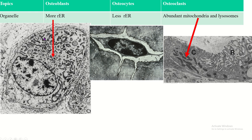The osteoblast contains more rough endoplasmic reticulum and Golgi complex. The osteocyte, being the inactive form of the osteoblast, contains fewer organelles — less rough endoplasmic reticulum and Golgi complex. The osteoclast contains many mitochondria and also lysosomes.